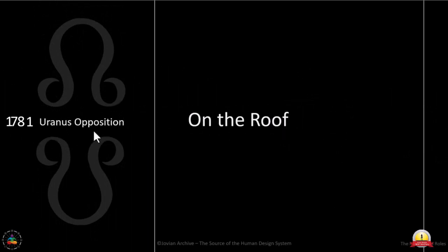Uranus opposition — remember, since 1781 this mutation has been in place, because that's when we went from 7-centered to now 9-centered beings being born. So everything about what human design has to offer us is our way of understanding our genetic imprints in order to align to our differentiated, unique — my mind said cosmic — difference.